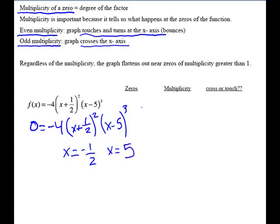Let's look at multiplicity here. The zeros are negative 1/2 and positive 5. Negative 1/2, you're looking at the exponent here. That tells you your multiplicity. That zero occurs two times. That is even. So it's going to come up to the x-axis, but it's not going to cross. It's going to turn around, touch it.